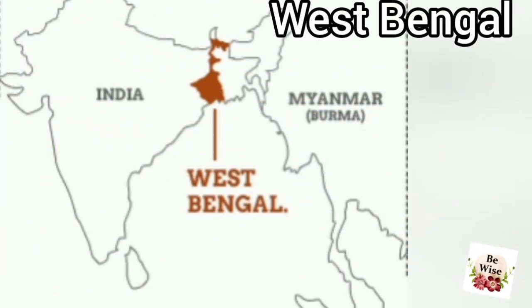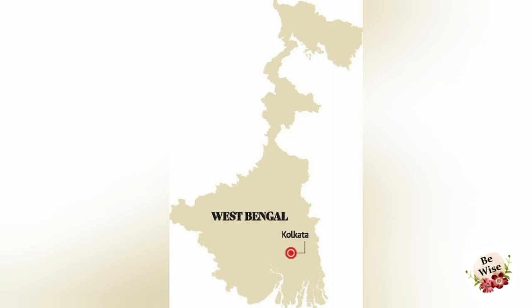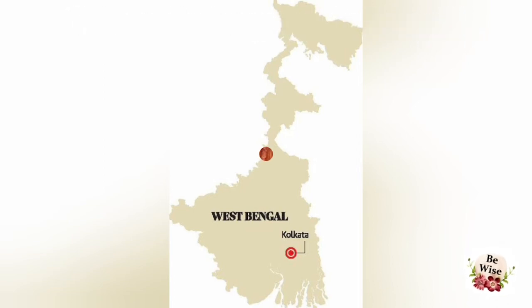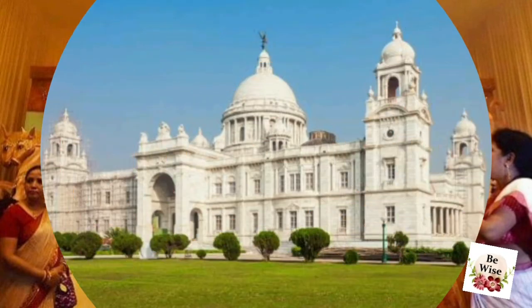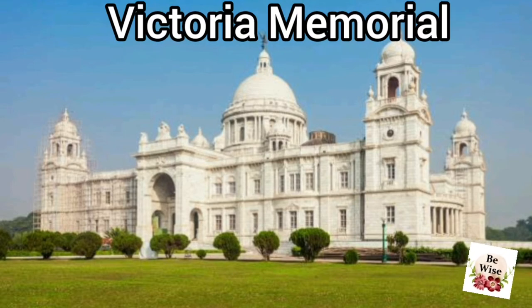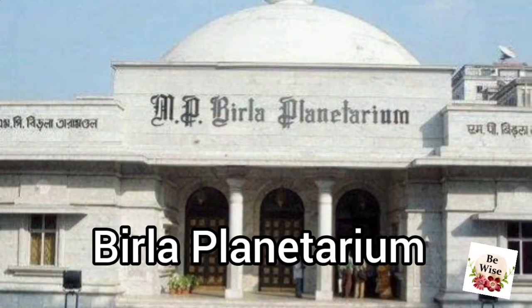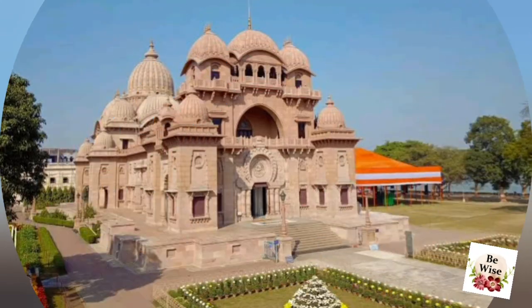West Bengal is located in the north-eastern part of India. Kolkata is its capital and Bengali is the main language. The major festival is Durga Puja. Some places of interest are Victoria Memorial, Zoological Garden, Birla Planetarium, Dakshineswar Temple, and Belur Math.